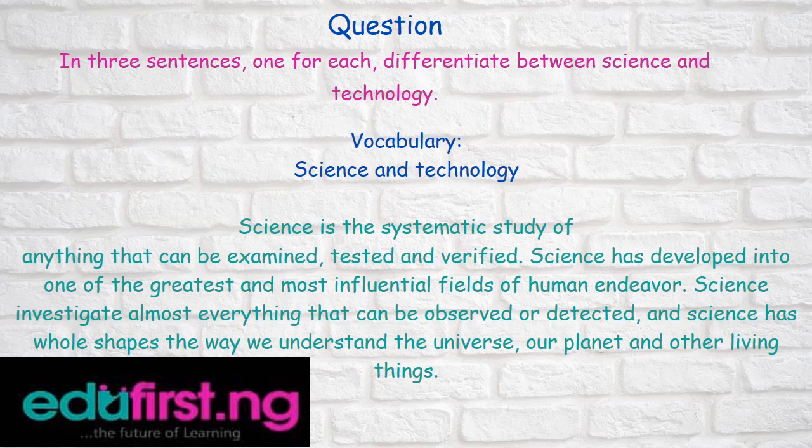In synthesis: differentiate between science and technology. Science is the systematic study of anything that can be examined, tested, and verified. Science has developed into one of the greatest and most influential fields of human endeavor. Science investigates almost everything that can be observed or detected, and science as a whole shapes the way we understand the universe, our planet, and other living things.